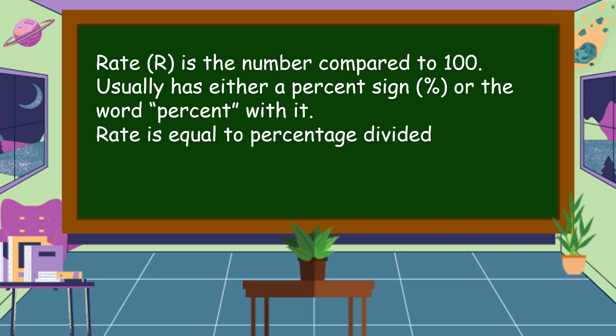Rate is equal to percentage divided by base: R equals P over B, where R is the rate or percent, P is the percentage, and B is the base.